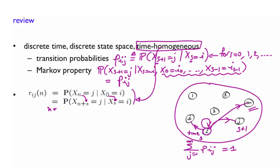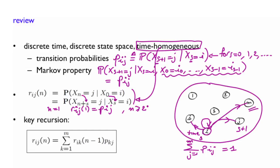For n equals 1, this is nothing else than rij of 1 is the same as these transition probabilities that we have defined. But for n greater than or equal to 2, what we have seen is the introduction of a key recursion here. And this is how you would be able to calculate these probabilities. Now, how did we come up with this recursion? Well, it's based on a classical divide and conquer and essentially the use of the total probability theorem.